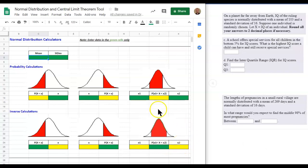In the Normal Distribution Central Limit Theorem tool, we're going to use this tool to answer these questions on the right. For this first problem, on a planet far away from Earth, IQ of the ruling species is normally distributed with a mean of 103 and a standard deviation of 16. Suppose that one individual is randomly selected or chosen. Let X equal the IQ of an individual. A school offers special services for all children in the bottom 5% for IQ scores. What is the highest IQ score a child can have and still receive special services?